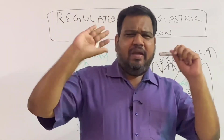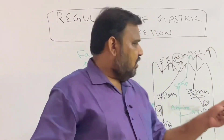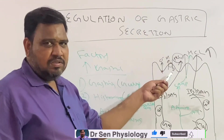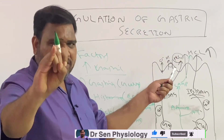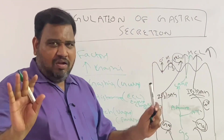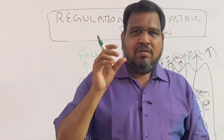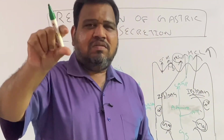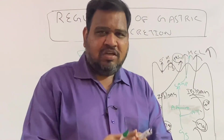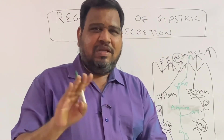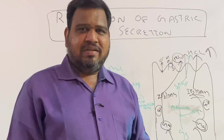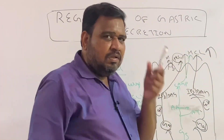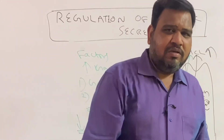If you ask which is the most important factor in HCl production, the answer is H+ K+ ATPase, because that is the final output from the parietal cell. And if you ask which is the most potent stimulus for HCl secretion among gastrin, histamine, and acetylcholine, the answer is histamine.